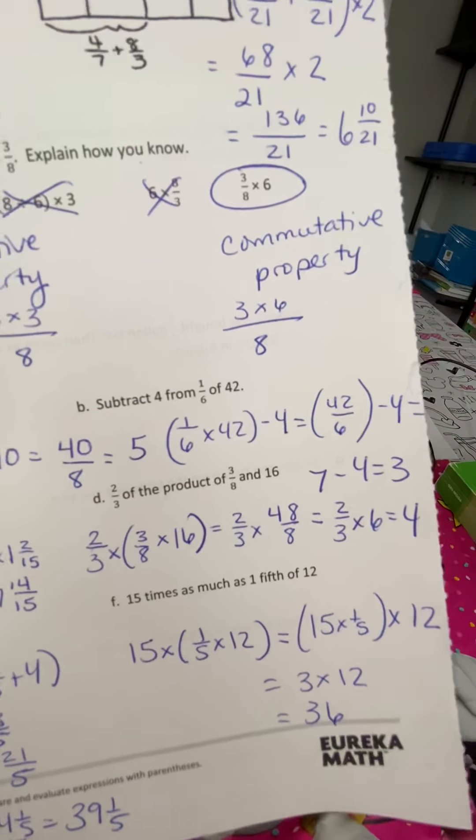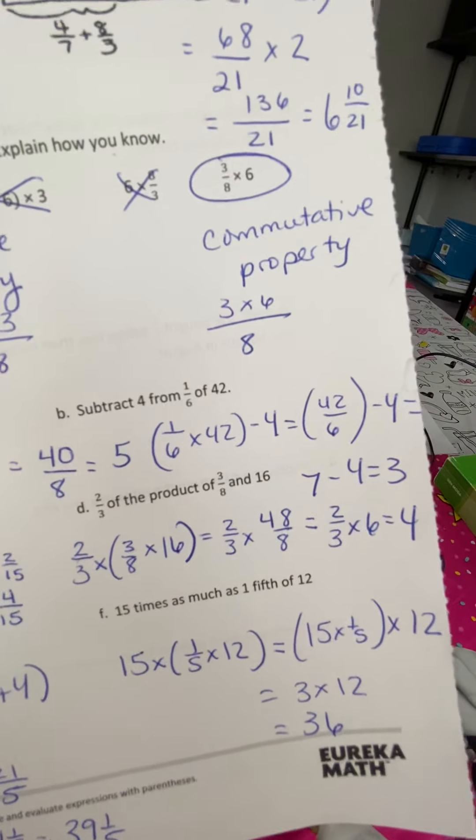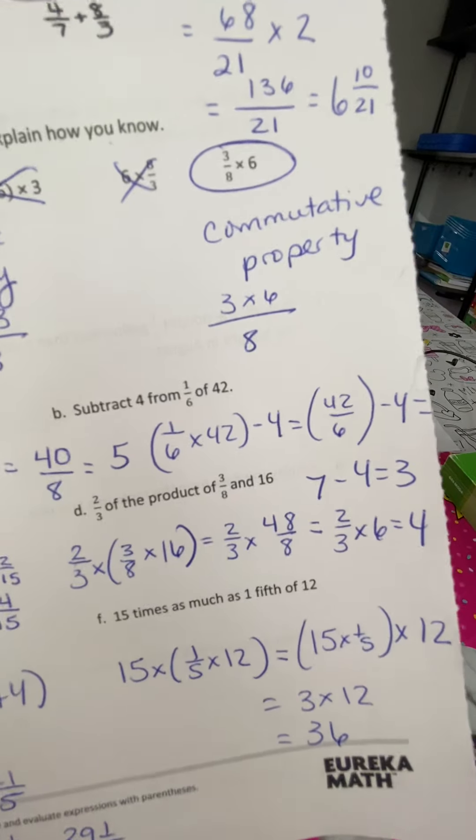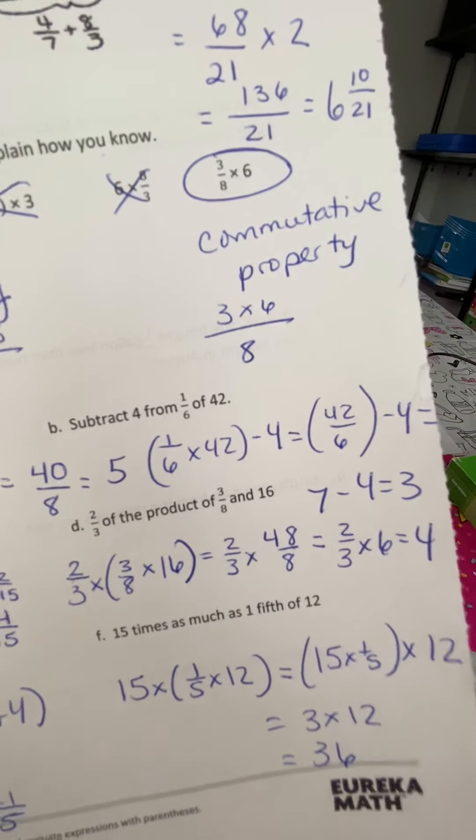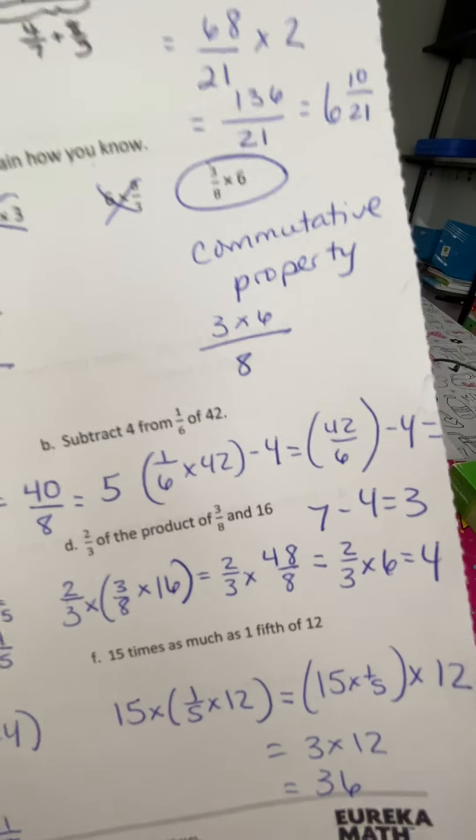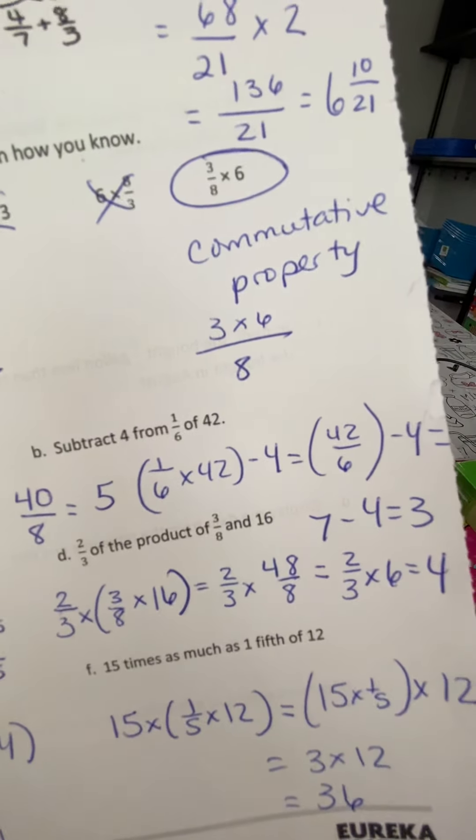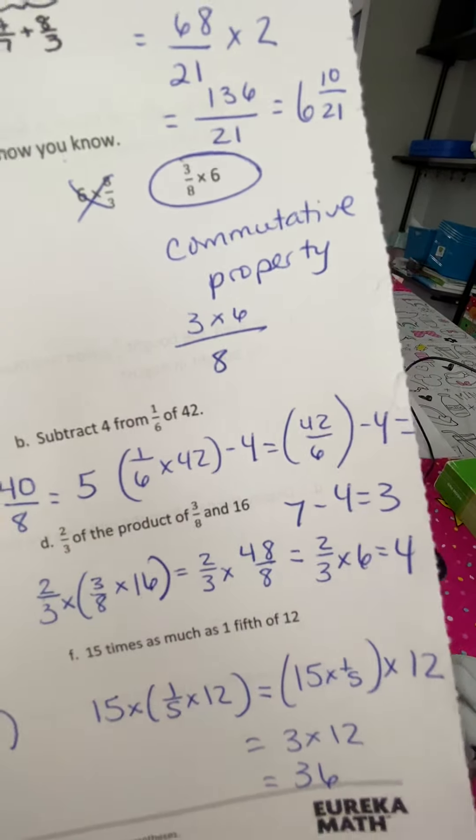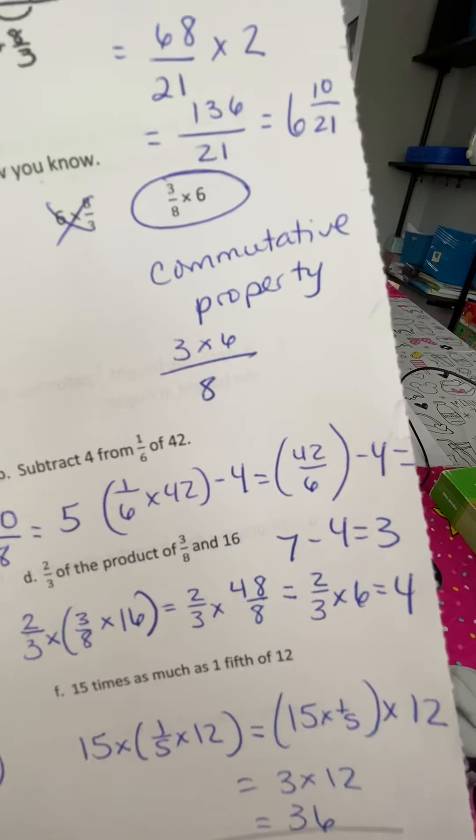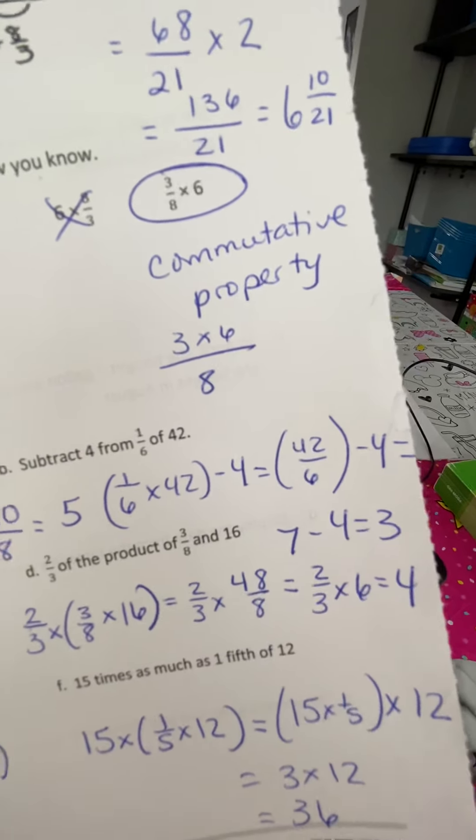Letter B. Subtract 4 from 1 sixth of 42. If you're doing 1 sixth of 42, you're doing 1 sixth times 42. Put that in parentheses and then subtract 4 from that. So 42 over 6 is 7 and 7 minus 4 is 3.